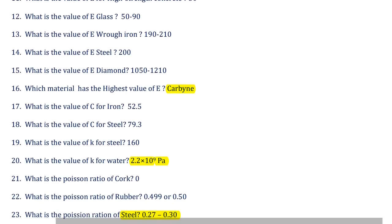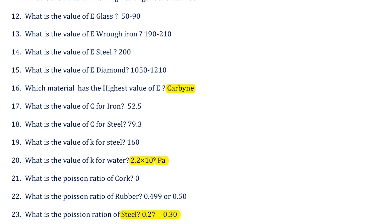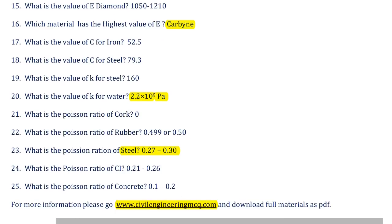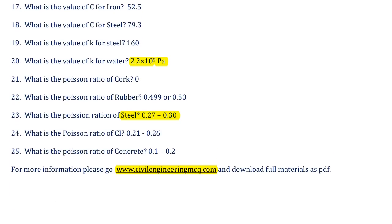Sixteenth question: which material has the highest value of Young's modulus? That is Carbyne, with a value of 13,100 GPa or kN/mm². Seventeenth question: the Shear modulus for high-end steel is 52.5 GPa. Eighteenth: Shear modulus for Steel is 79.3 GPa. Nineteenth: Bulk modulus (K) for Steel is 160 GPa or kN/mm².